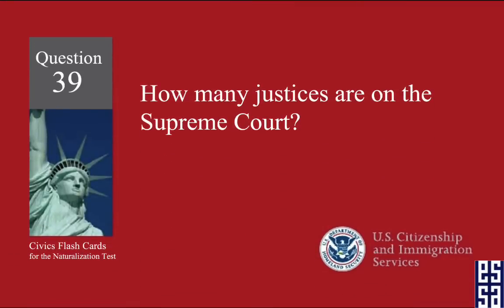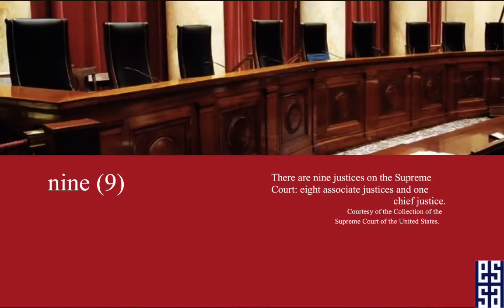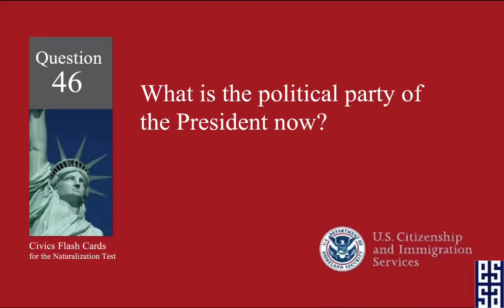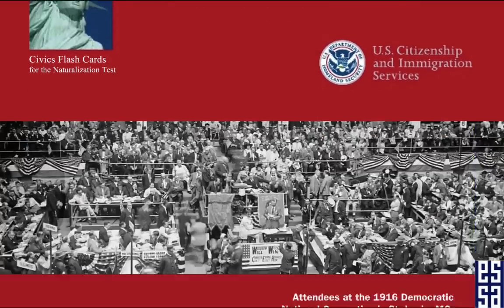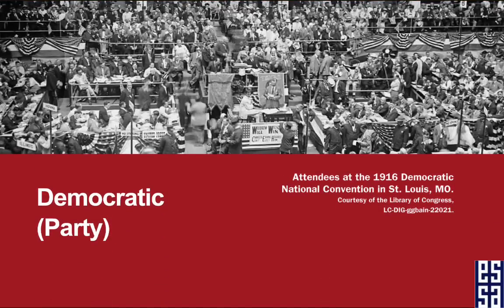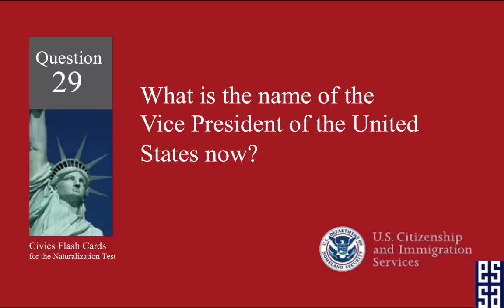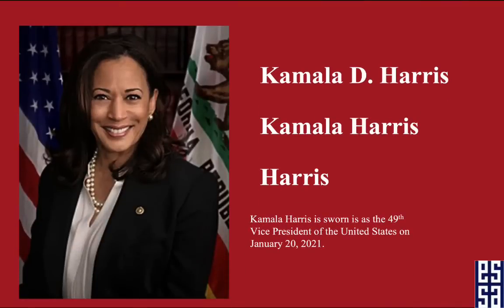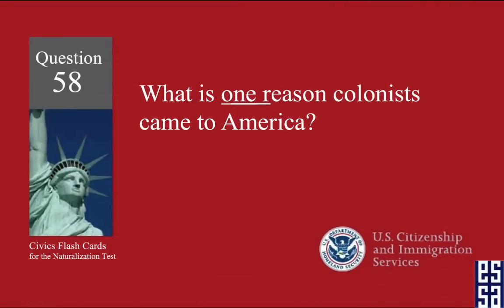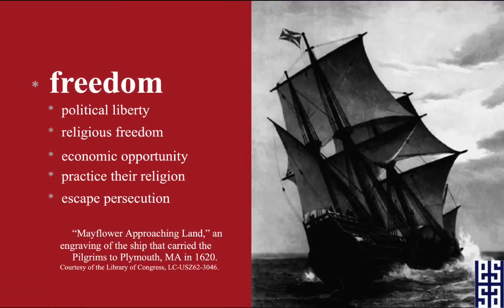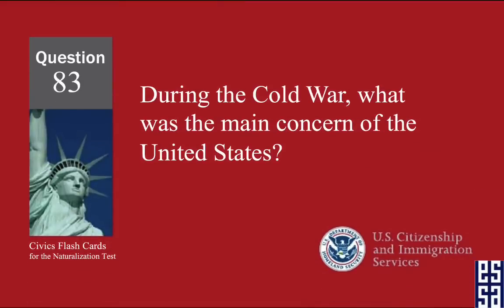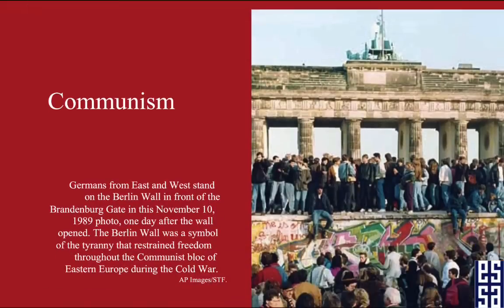How many justices are on the Supreme Court? Nine. What is the political party of the president now? Democratic. What is the name of the vice president of the United States now? Kamala Harris. What is one reason colonists came to America? Freedom. During the Cold War, what was the main concern of the United States? Communism.